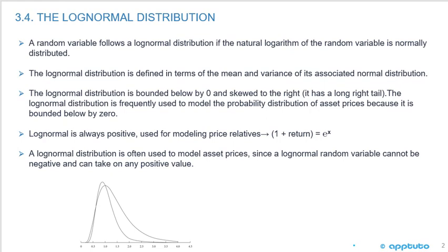Unlike the normal distribution, the lognormal distribution is bounded by zero and it's skewed to the right — it has a long right tail. We can see that here; on the left axis it's bounded by zero.